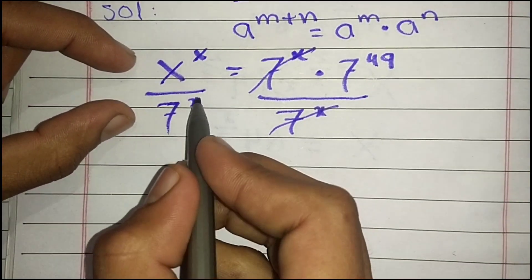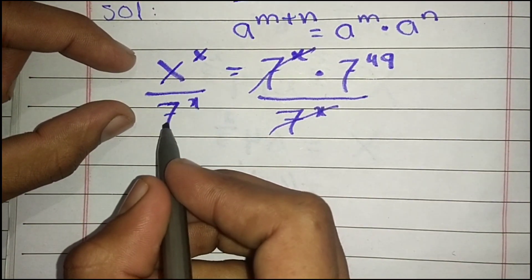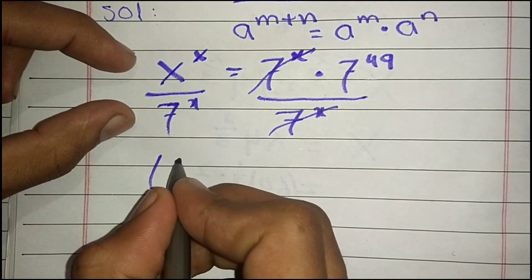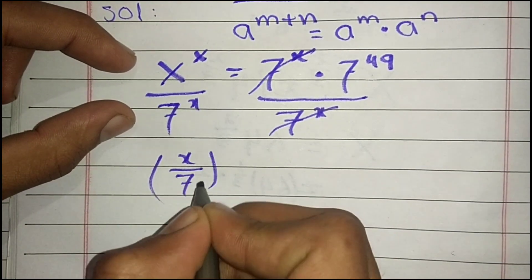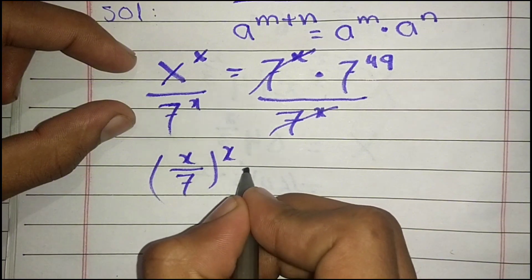On this side we have the same power on x and 7, so we take (x/7)^x as common.